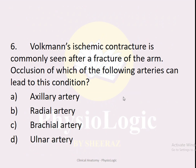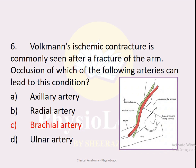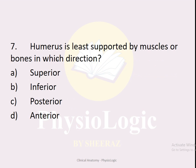MCQ number six: Volkmann's ischemic contracture is commonly seen after fracture of the arm. Occlusion of which artery leads to this condition? Options: A — axillary, B — radial, C — brachial, D — ulnar. The correct option is C — brachial artery. Occlusion following a supracondylar fracture can compromise blood flow through the brachial artery, ultimately resulting in Volkmann's ischemic contracture.